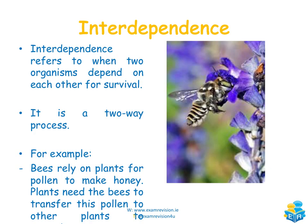Interdependence refers to when two organisms depend on each other for survival — it is a two-way process. For example, bees rely on plants for pollen to make honey, but plants also need bees to transfer pollen to other plants so they can reproduce. In any exam question on interdependence, you must give both sides of the relationship.